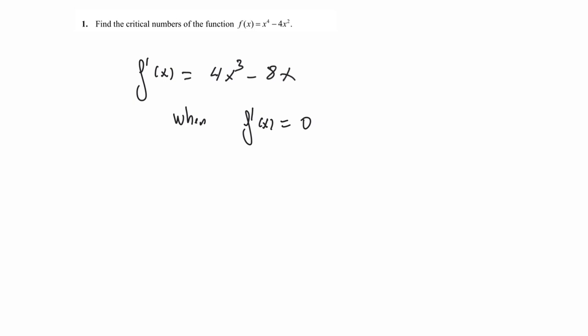It means that the function has a tangent line with a horizontal slope at those points. So let's write 4x cubed minus 8x equals zero and solve.